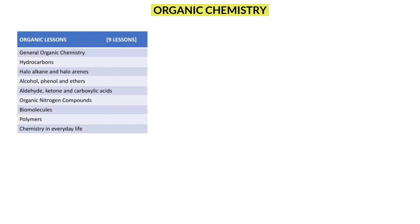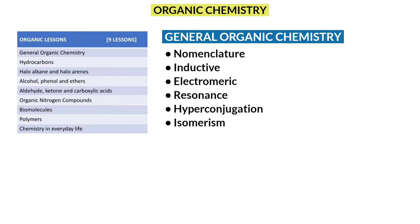Totally, there are 9 chapters in organic chemistry. Like periodic classification for inorganic chemistry, in organic, first and foremost chapter to study is general organic chemistry, GOC. In that, nomenclature, naming of organic compounds and various effects like inductive, electromeric, resonance, hyperconjugation and isomerism is very important.